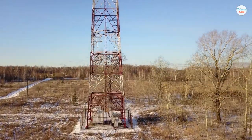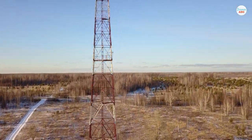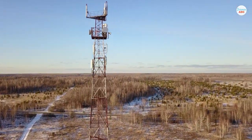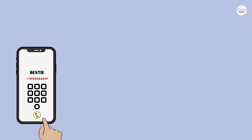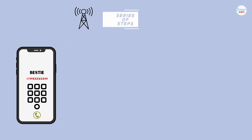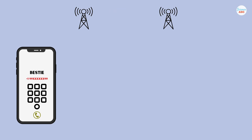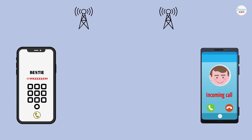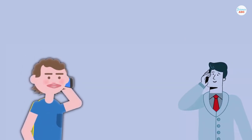As you may know, network towers are an indispensable component of wireless telephony. Suppose that you want to call a friend. As soon as you hit the call button, your phone sends a signal to the nearest network tower. From there, the signal goes through a series of steps to arrive at another tower — the one nearest your friend. Finally, the signals from the tower are received by your friend's phone, and the conversation can begin.